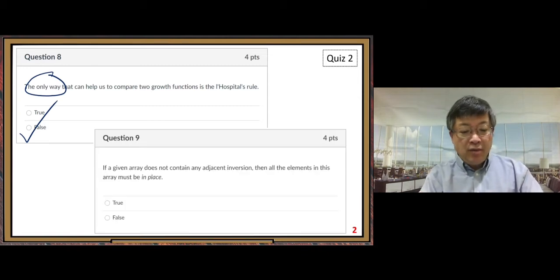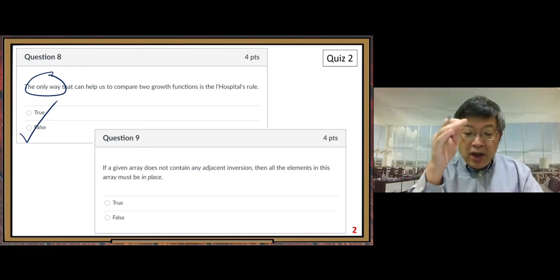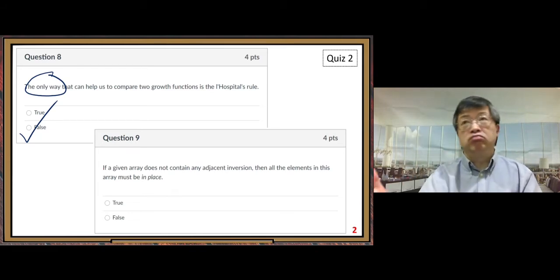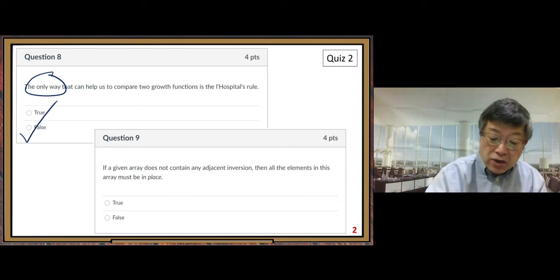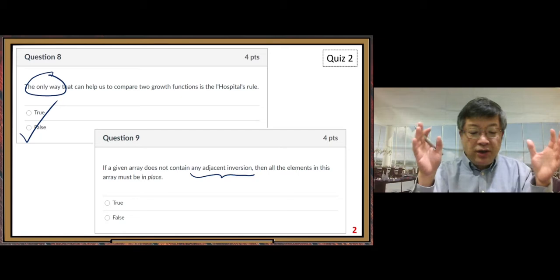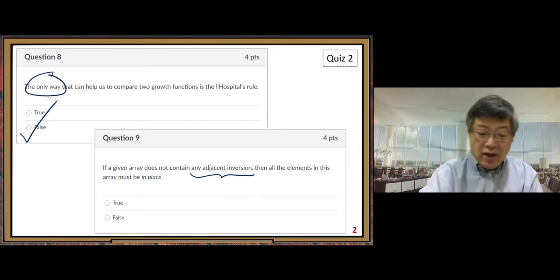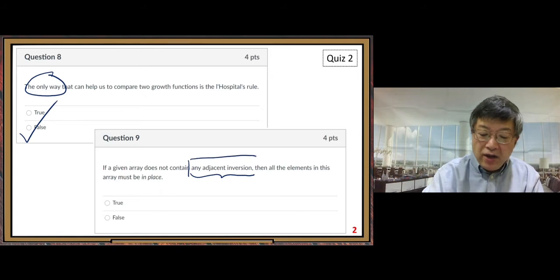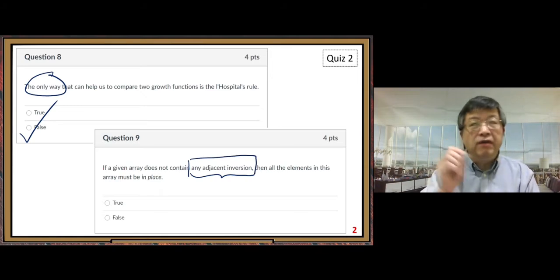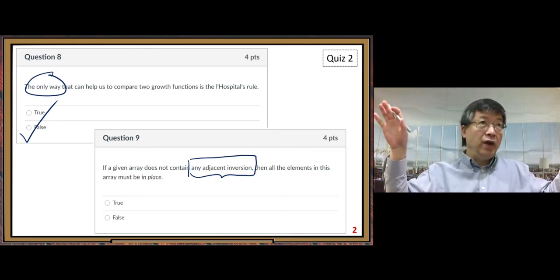Next one, number 9. If a given array does not contain any adjacent inversion, no adjacent inversion, then all the elements in this array must be in place. True or false? The answer is true. If a given array does not contain any adjacent inversion, then all sorted.